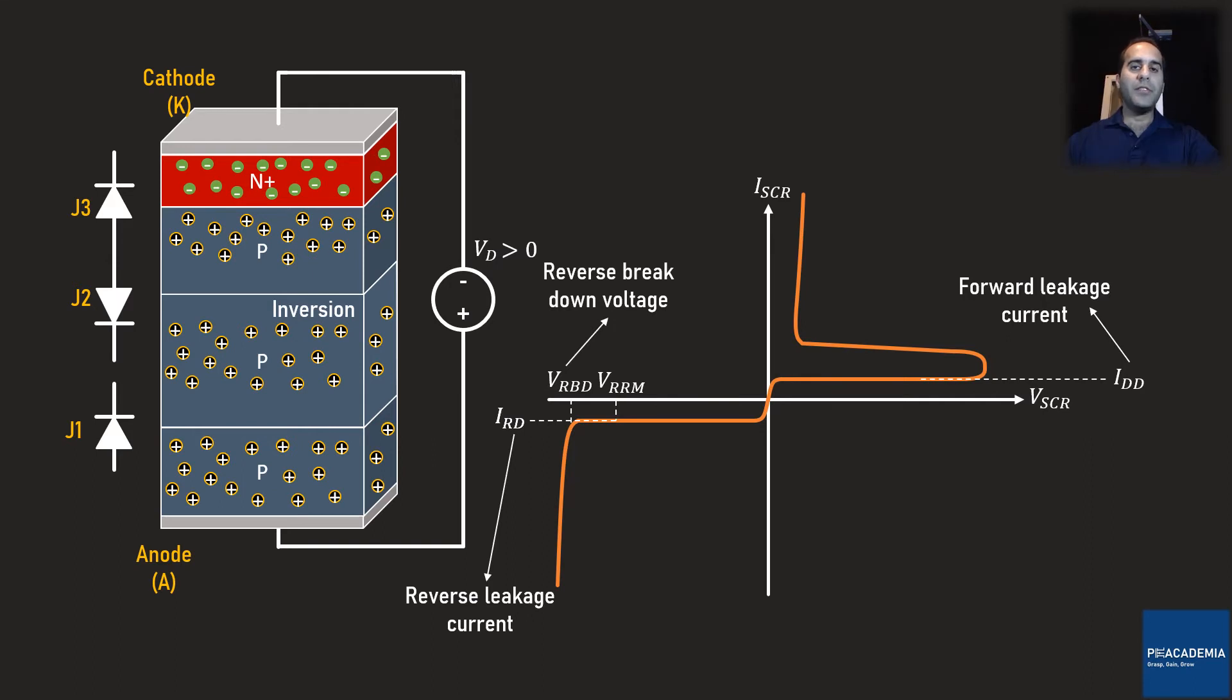On the top end of the device, pretty much the same process is taking place. By increasing Vd, more negative potential energy is applied to the cathode electrode and more free electrons from the N minus semiconductor are repelled. These electrons diffuse into the P semiconductor through the junction J3 and recombine with the holes. Note that the majority charge carriers in the P semiconductor are holes. If Vd is large enough, the electrons outnumber the holes in the P-type semiconductor. And after the recombination process, a handful of electrons remain. As a result, the P-type semiconductor is inverted into an N-type semiconductor.